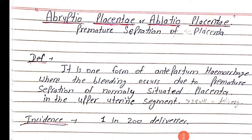Hello students. Today's topic is Abruptio Placenta. Abruptio Placenta, also called Premature Separation of Placenta, is one form of Antepartum Hemorrhage where bleeding occurs due to the premature separation of a normally situated placenta in the upper uterine segment, occurring more than 28 weeks of gestation.